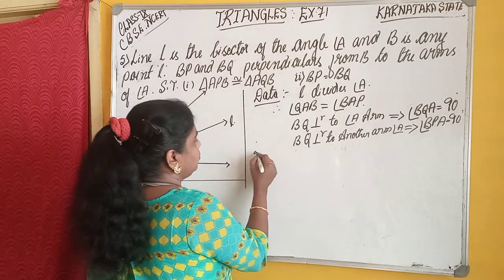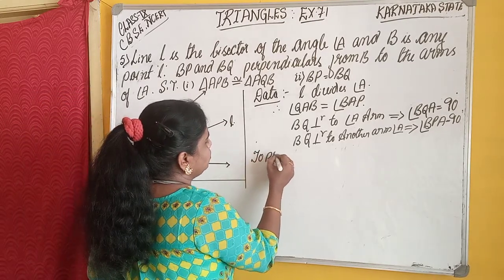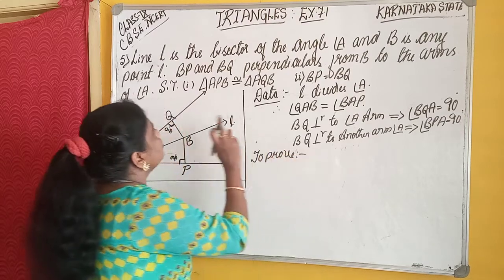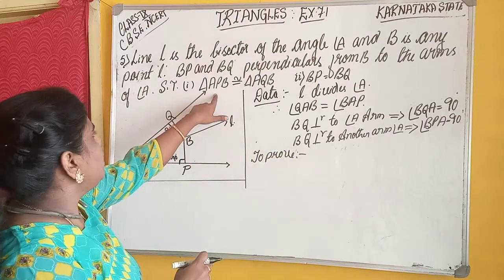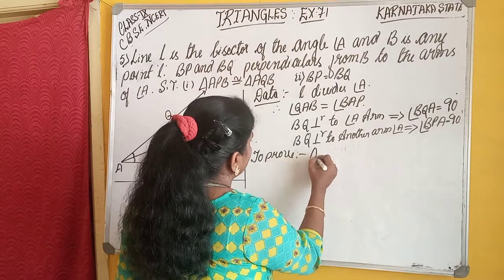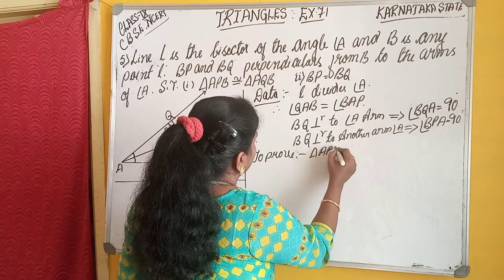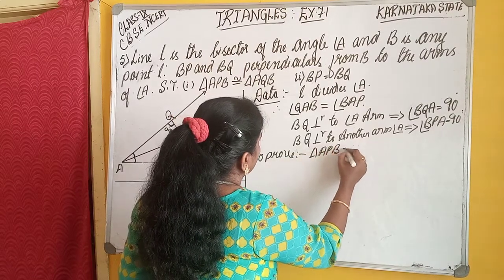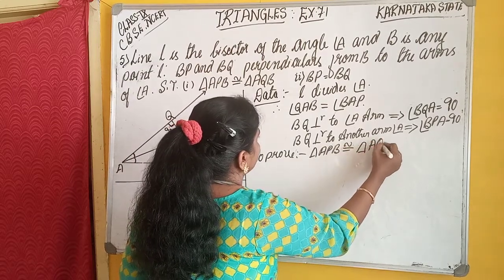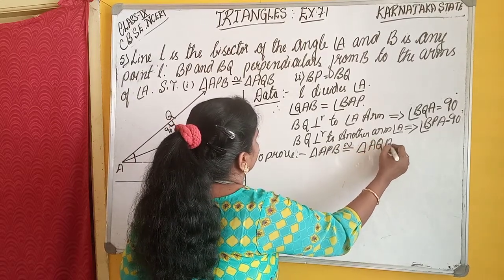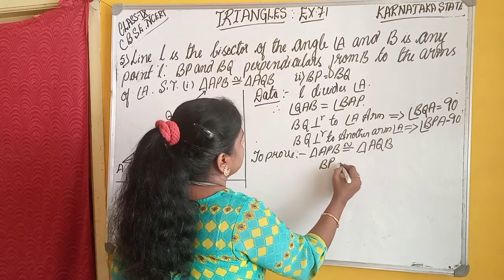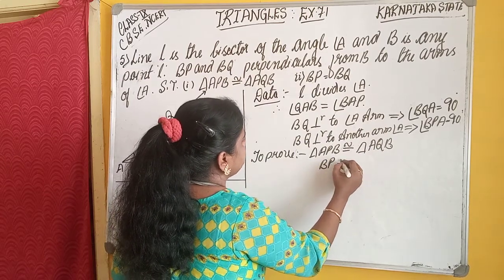Now, what do we have to prove? We have to prove that triangle APB is congruent to triangle AQB, and also that BP is equal to BQ. This is what we have to prove.